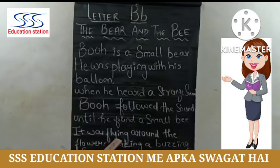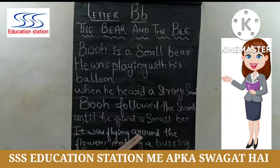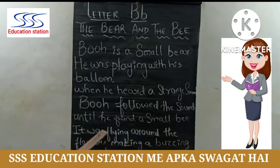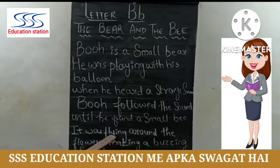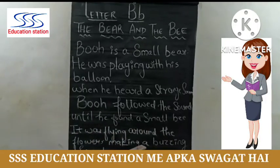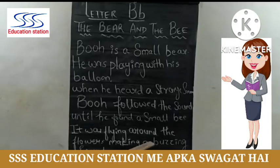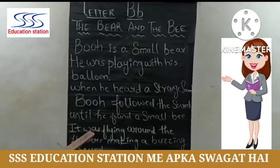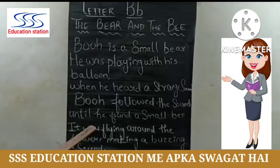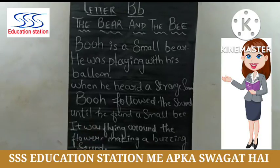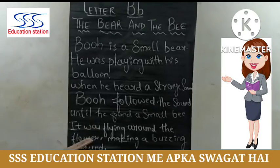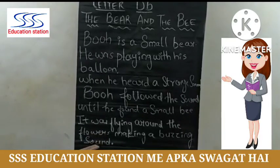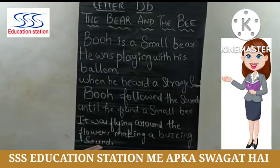It was flying around the flowers, making a buzzing sound. मधु मक्खी की जो आवाज होती है, भीं करके जो एक आवाज निकलती है — वो उसे वहाँ पे flower के ऊपर, फूल जो होते हैं, उसके ऊपर आवाज करती हुई मधु मक्खी बैठी थी.